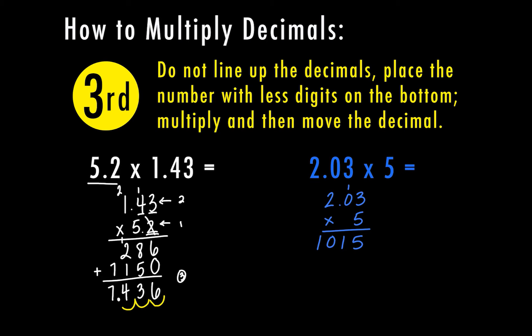Now all I have to do is check and move my decimals. In the first row I have 1, 2 places after the decimal. In the second row I have 0. So my total is 2 places to move — going 1, 2. So my answer is 10 and 15 hundredths.